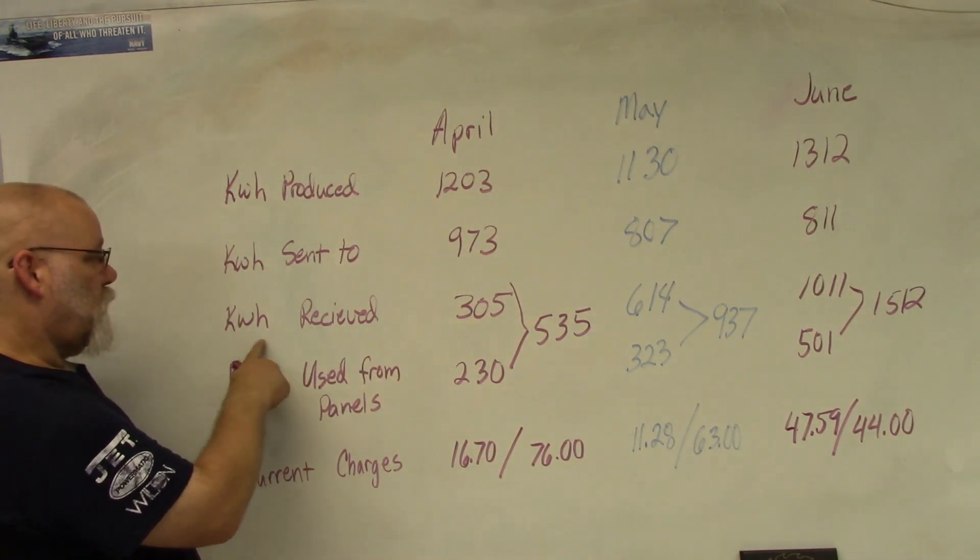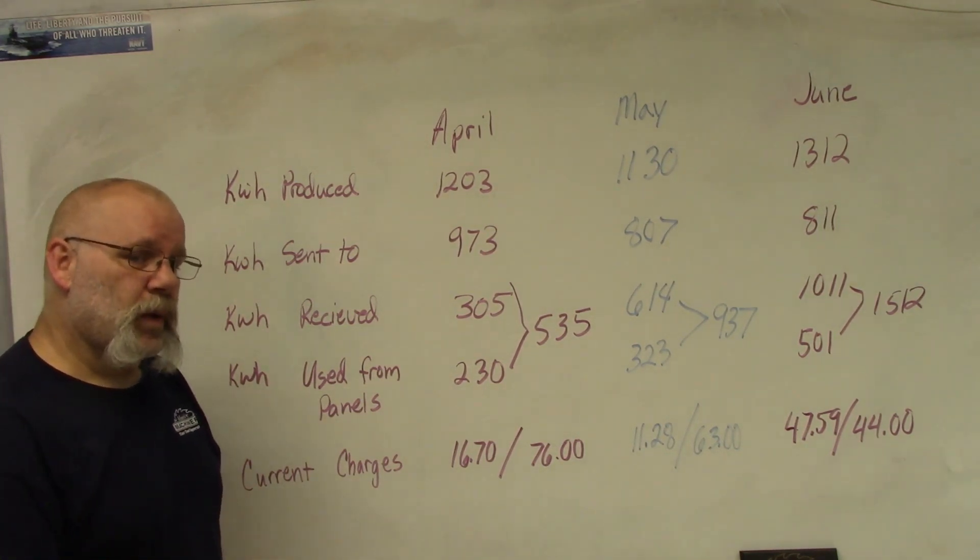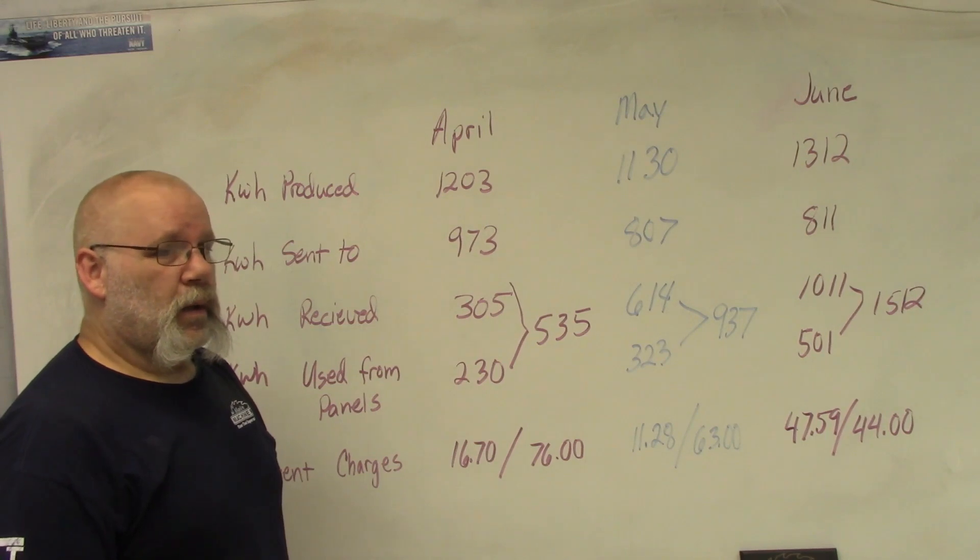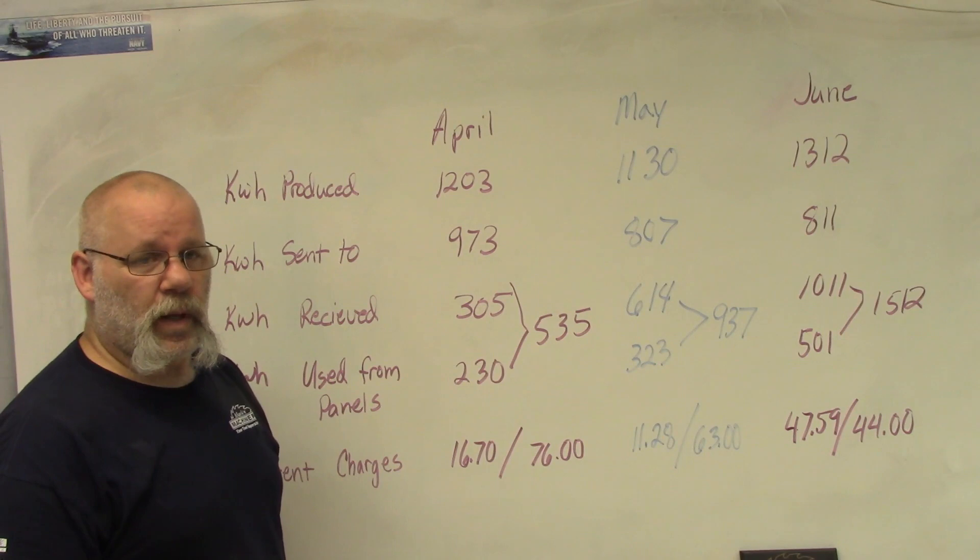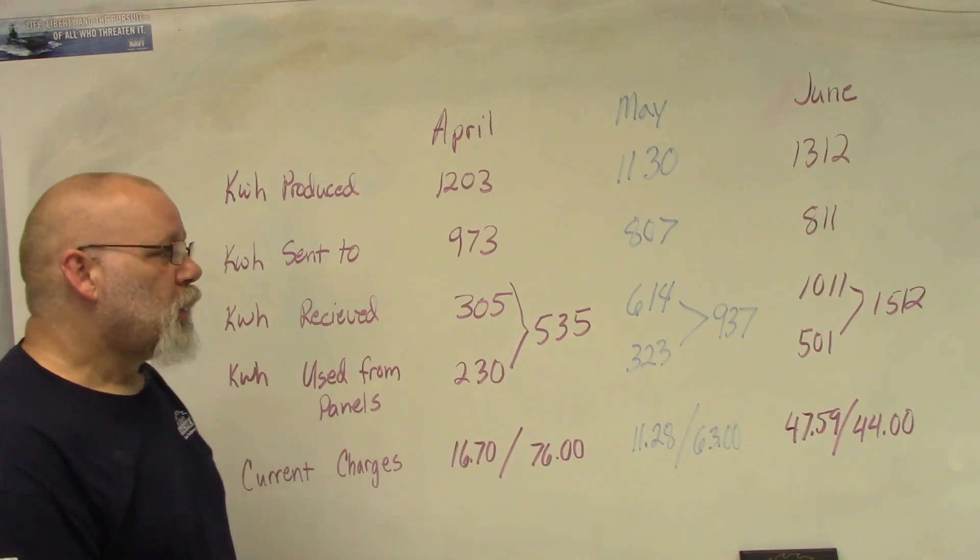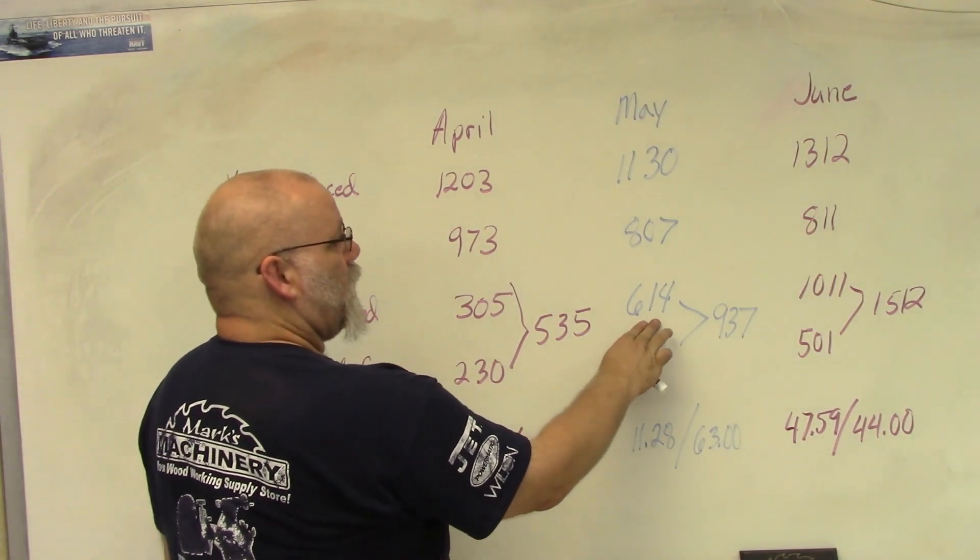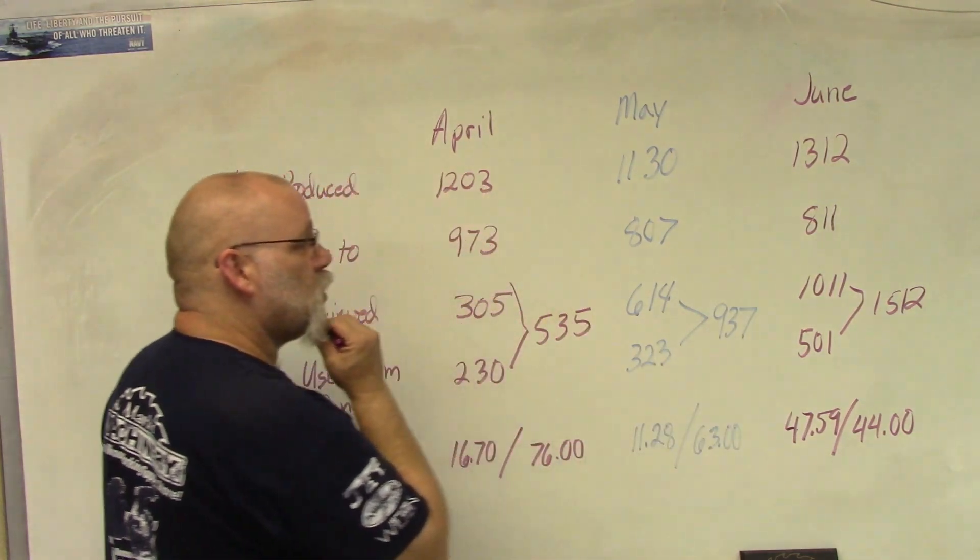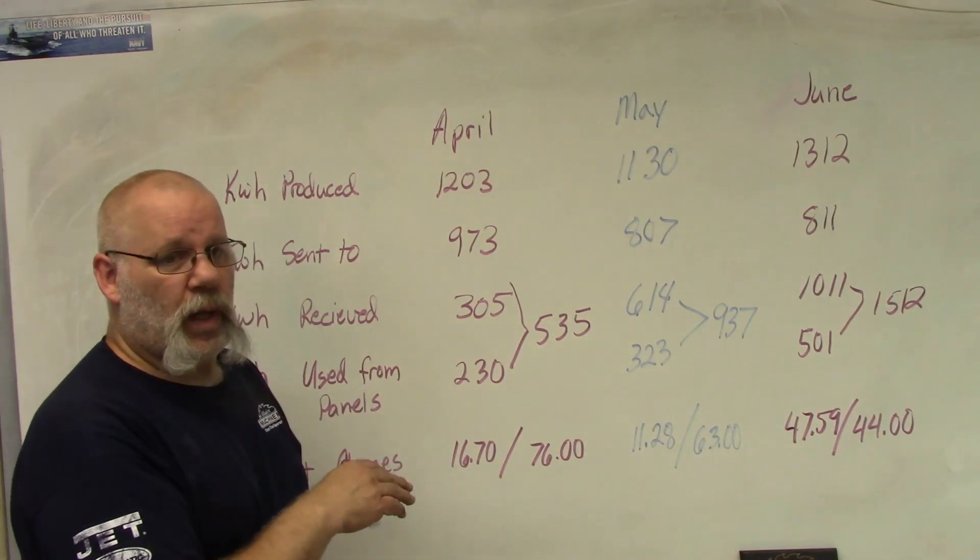The next one is kilowatt hours received. This is how much kilowatt hours we've received from the power company. At night when our solar panels are not generating electricity and our air conditioner's running and everything else is drawing electricity from the power company. In April we drew 305 kilowatt hours, in May we drew 614 kilowatt hours, and in June we drew 1,011 kilowatt hours.